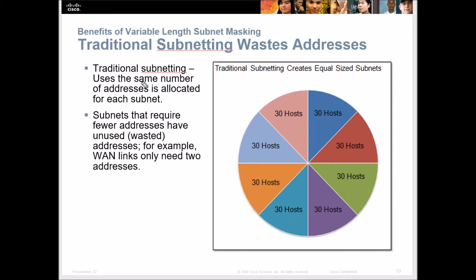Under traditional subnetting, we use the same number of addresses in each subnet, so subnets that require fewer addresses are just wasted. For example, if we have 30 hosts in a subnet and only need two, 28 of those host IP addresses are wasted — especially on a link between two routers where we only need two host IP addresses.